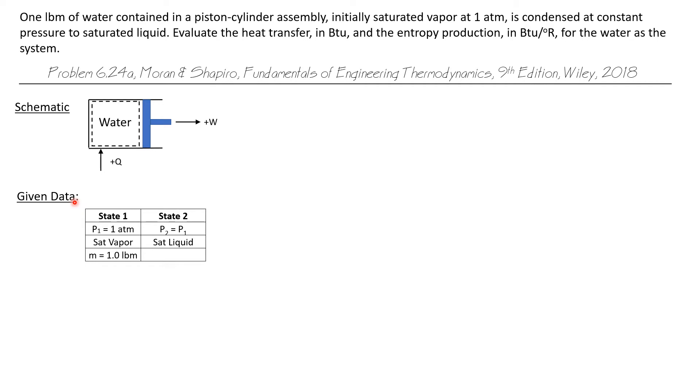Here's what we're given for state data. State one, the pressure is one atmosphere and it's saturated vapor, and there is one pound mass of water. It's a constant pressure process, so state two has the same pressure as state one, but it is a saturated liquid state.